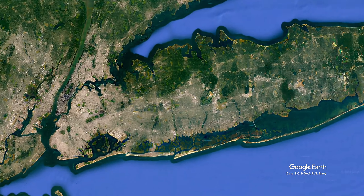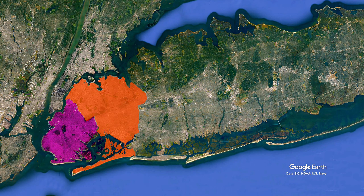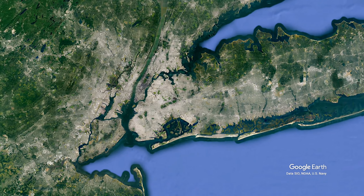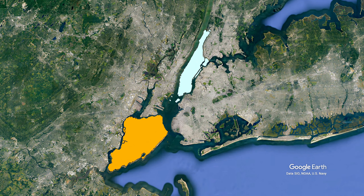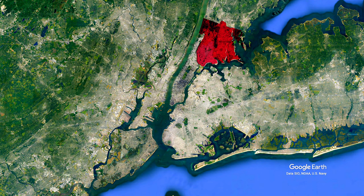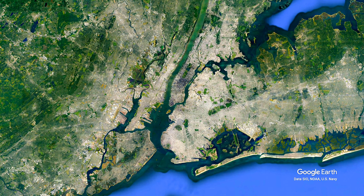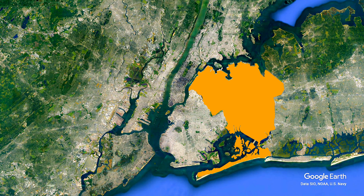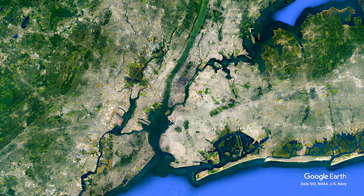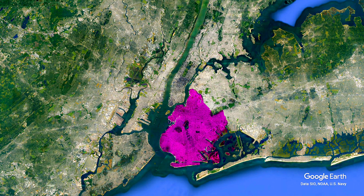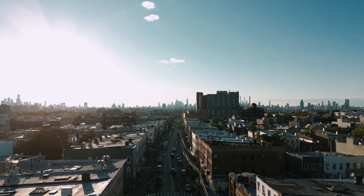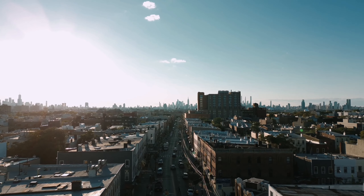Brooklyn and Queens occupy the western portion of Long Island, while Staten Island and Manhattan are completely on their own landmass. The Bronx is the only New York City borough not primarily located on an island. Queens is the largest borough by area, although it is not the most populous — that title goes to Brooklyn, which has a population of roughly 2.7 million inhabitants.